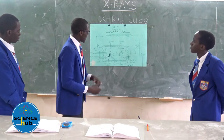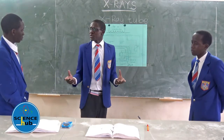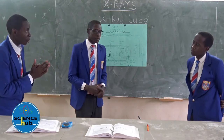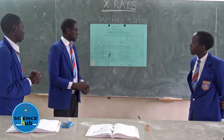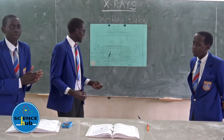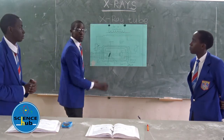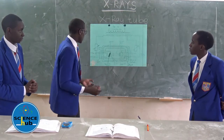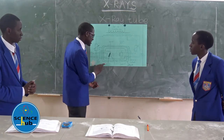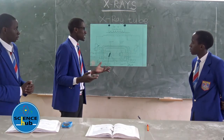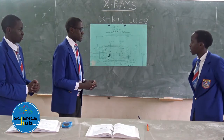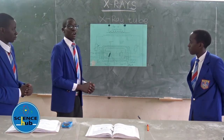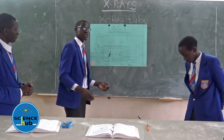Why do we use tungsten target? We use tungsten target because it has a high melting point. Apart from tungsten metal, we can also use molybdenum.